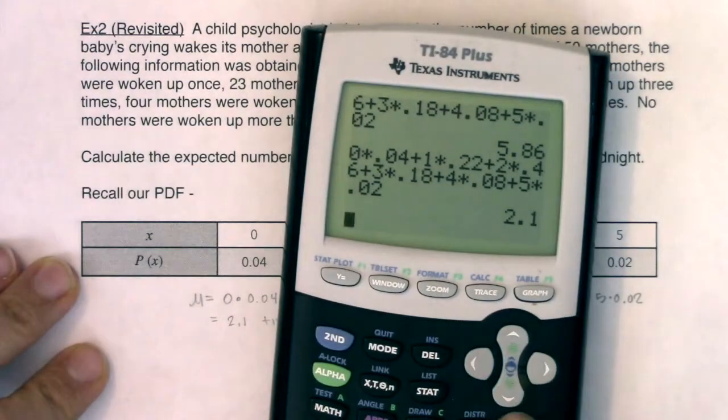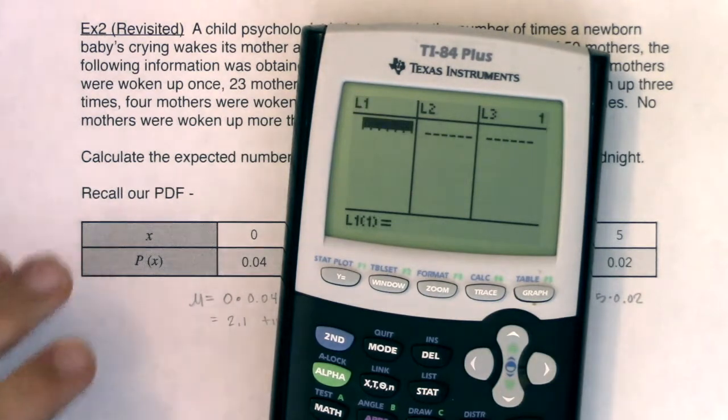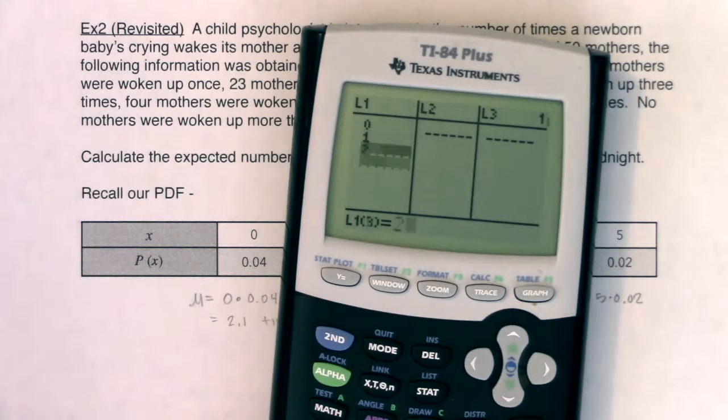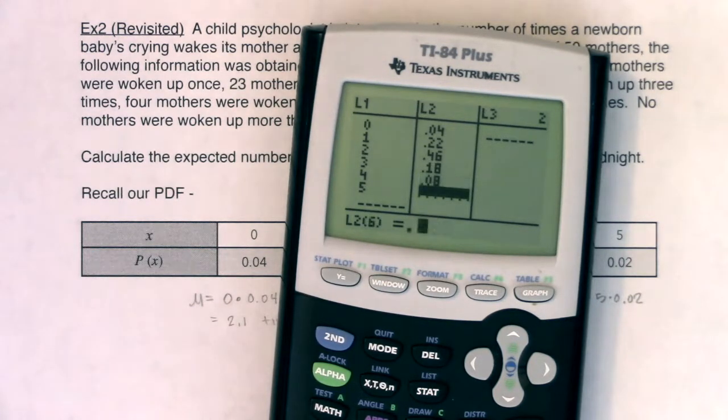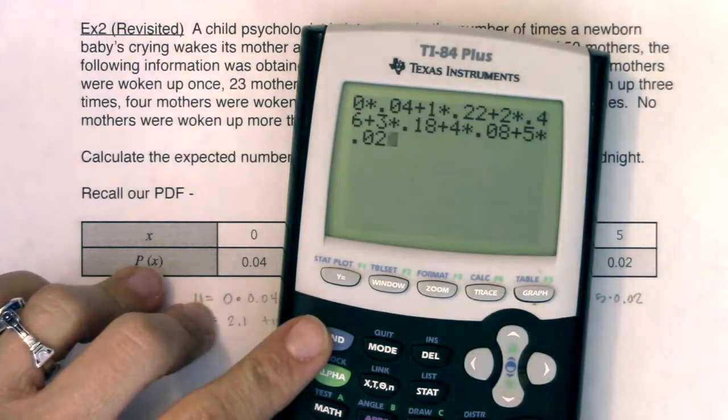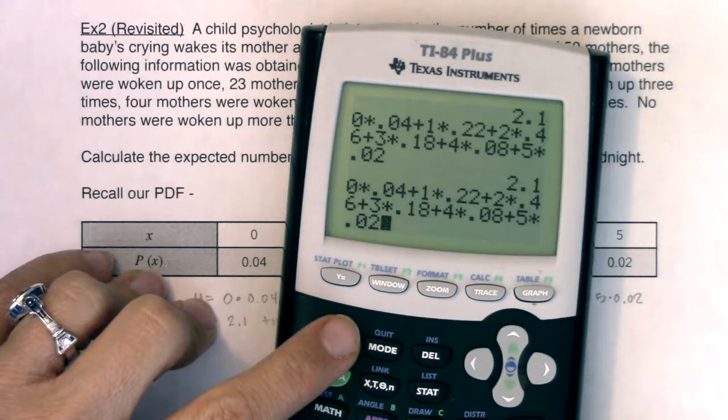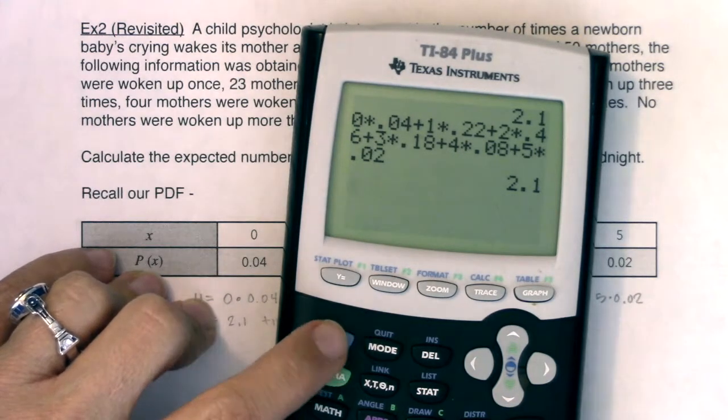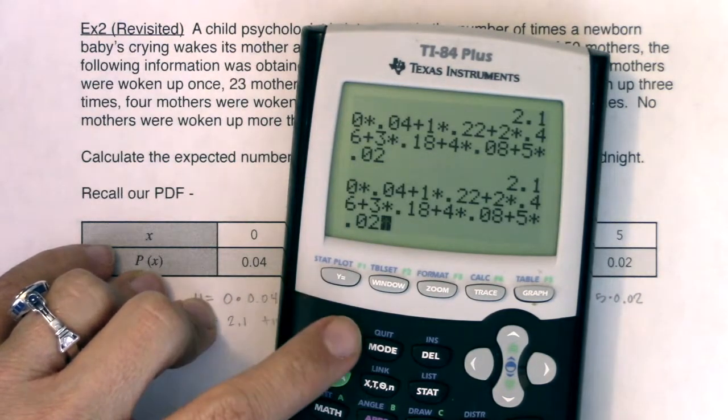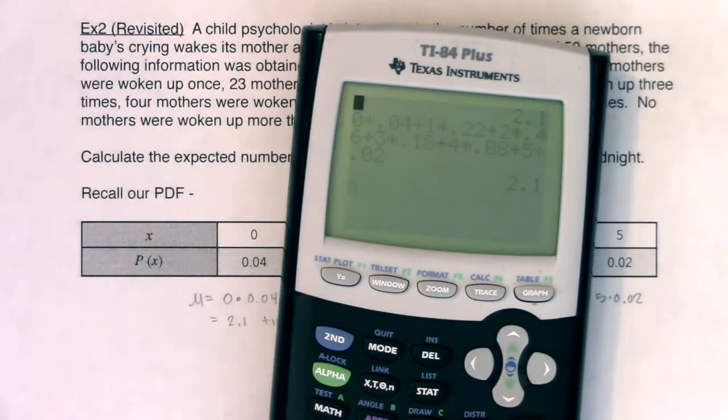I want to point out something - you saw how tricky it was to enter all of this into our calculator. You saw me make a typo. It happens all the time. So I want to show you a cleaner way of getting this done. Let's go clear out our lists and put our data into our list. I'm going to put the values of my variable into L1, and then I want to put those respective probabilities into L2.